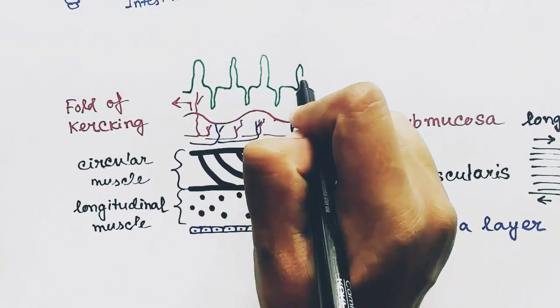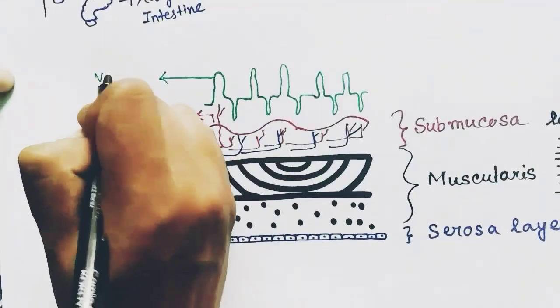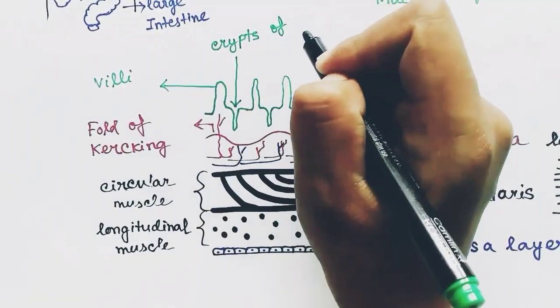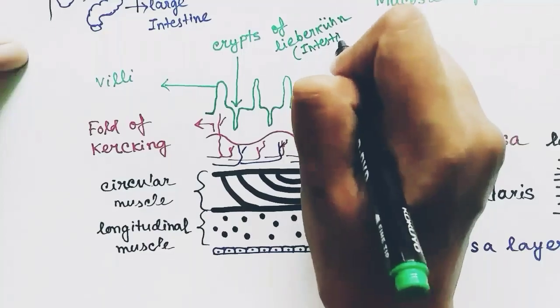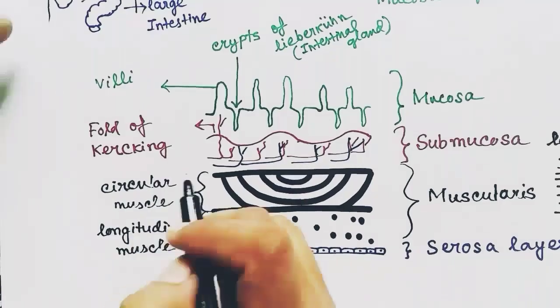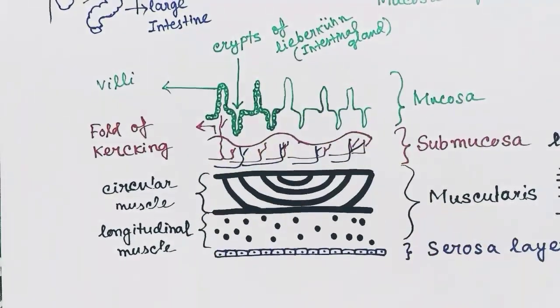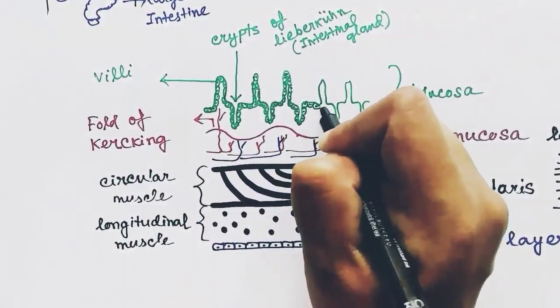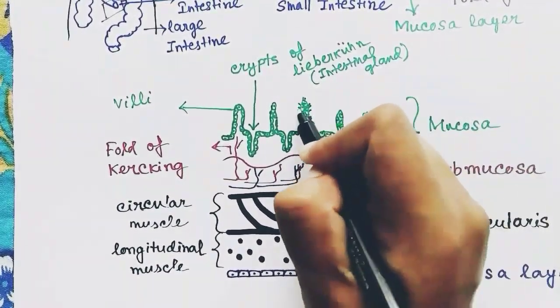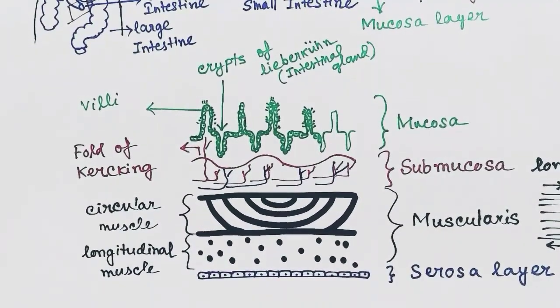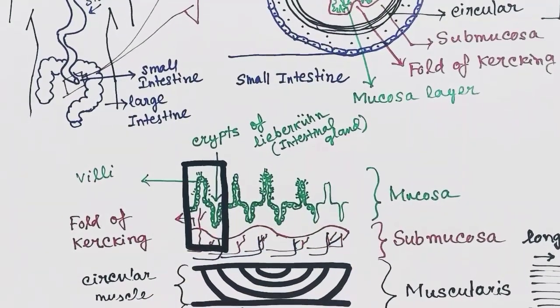The submucosa layer also has blood supply, which extends to the mucosa layer for absorption of nutrition from food. The mucosa layer has lots of villi for absorption and also has invaginations called the crypts of Lieberkühn, also known as intestinal glands. Now we will cut a section here and look into the villi and the crypts of Lieberkühn and their cells in detail.